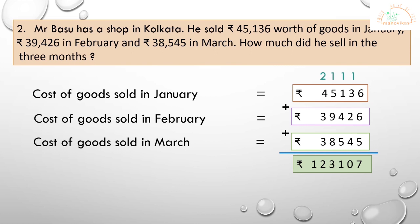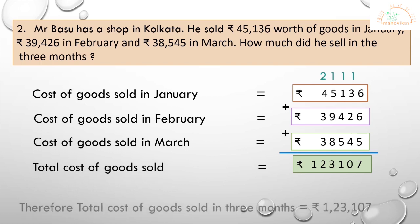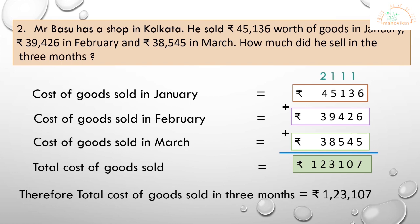After performing the addition of 45,136 + 39,426 + 38,545, we get rupees one lakh twenty-three thousand one hundred and seven (1,23,107) as the total cost of goods sold. The final statement: therefore, the total cost of goods sold in three months is equal to rupees one lakh twenty-three thousand one hundred and seven.